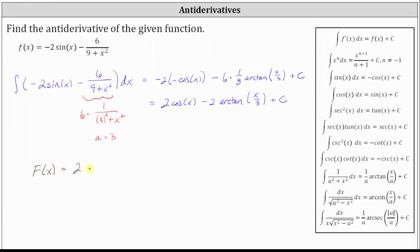again, two cosine x minus two arctangent of x divided by three plus c. And of course, we could also use inverse tangent here instead of arctangent.